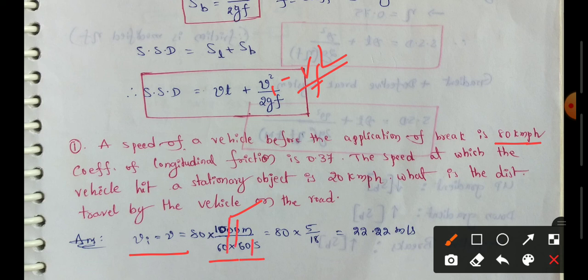So zeros cancel. 80 into 5 by 18, so final value simplify 22.22 meters per second. That's why we have VI value.